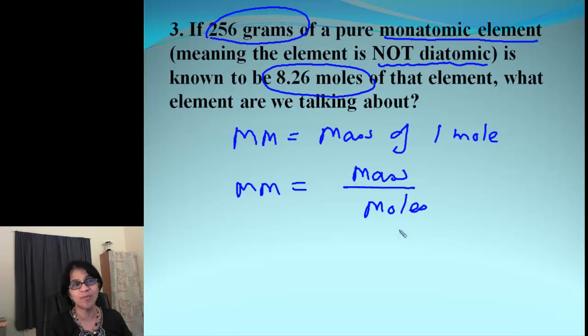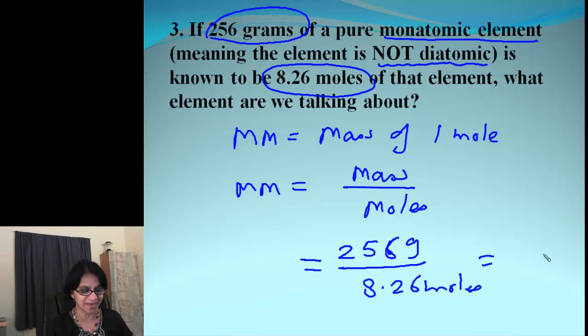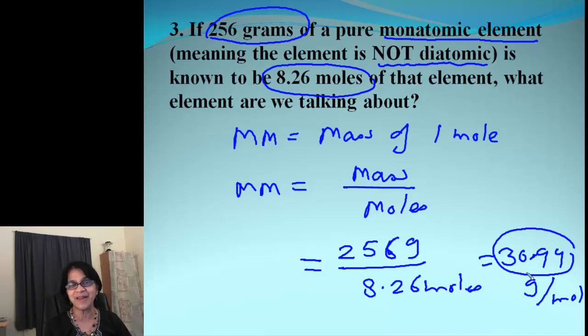So it is the mass of one mole, which actually I can write down as mass divided by moles. So if I have the total mass and total number of moles, and if I divide that, what I get is mass per mole, which is the molar mass. So what do we have? The mass is 256 grams and the moles are 8.26 moles. So when we simplify that, I am getting the answer 30.99 and that is grams per mole. So you look at the periodic table and find out which element has that mass closest to 30.99. And you will find out that element is nothing but simply phosphorus P.